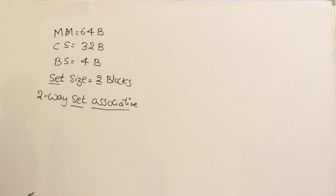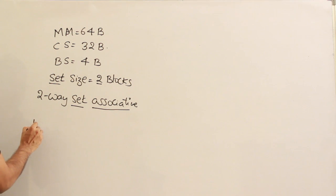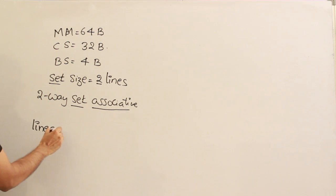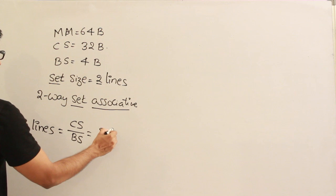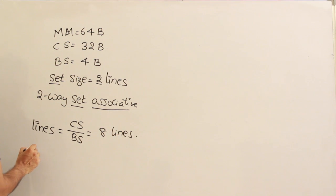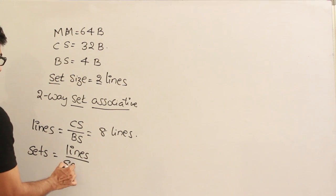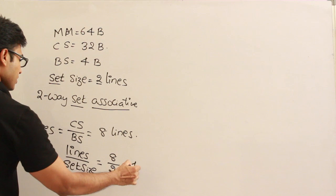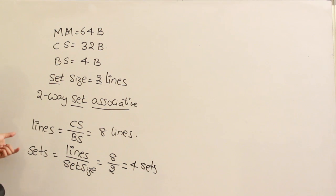Now let's get into the details. Number of lines in the cache equals cache size divided by block size, which is 32 divided by 4 — that gives us 8 lines. Number of sets equals number of lines divided by set size: 8 divided by 2 equals 4 sets. So the cache has 8 lines divided into 4 sets.